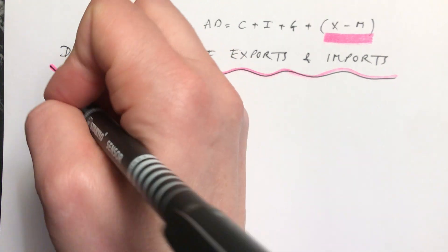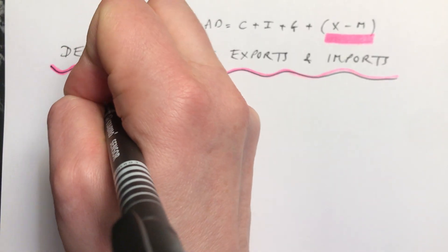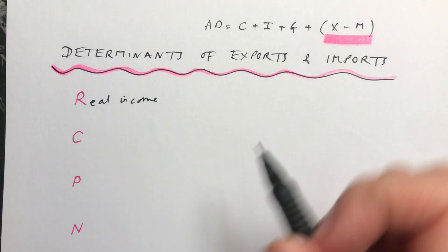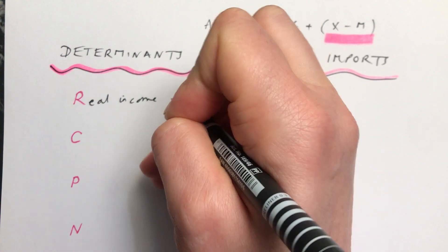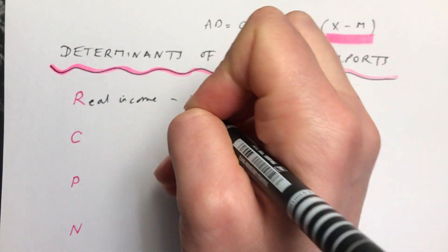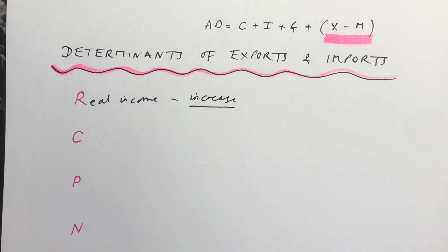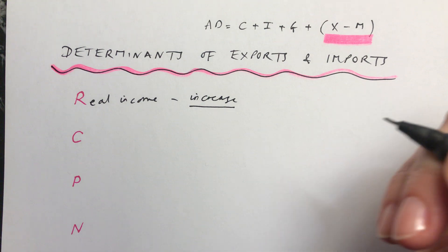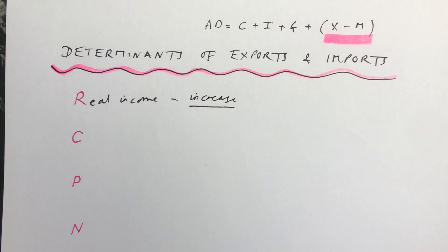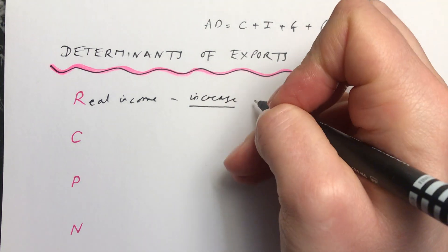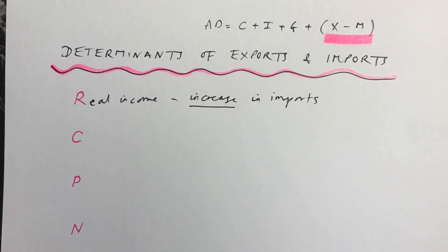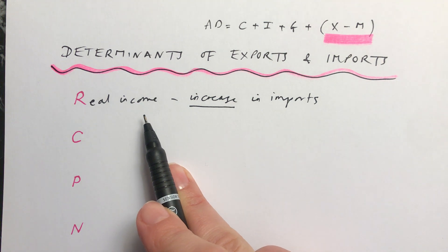R, the first one, stands for real income within your economy. If your real incomes increase, for example, that will mean that people have got more disposable income to spend. Generally speaking, consumption will go up, and when people go shopping, many of the things that people buy will have been imported from somewhere else.